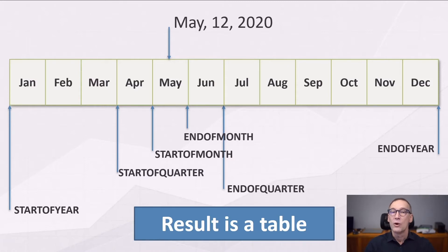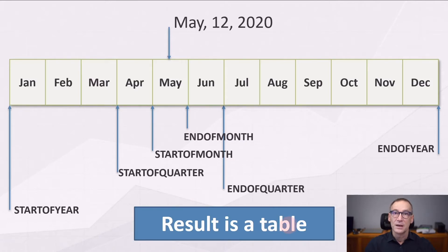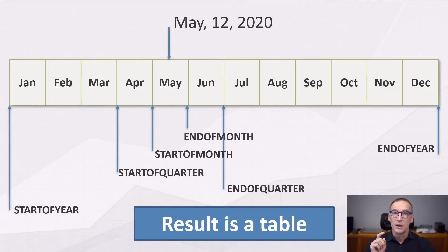Keep in mind: all these functions return a table. The result is a table, to make them convenient to use as CALCULATE filters. This is how they behave when the filter context contains one date only.